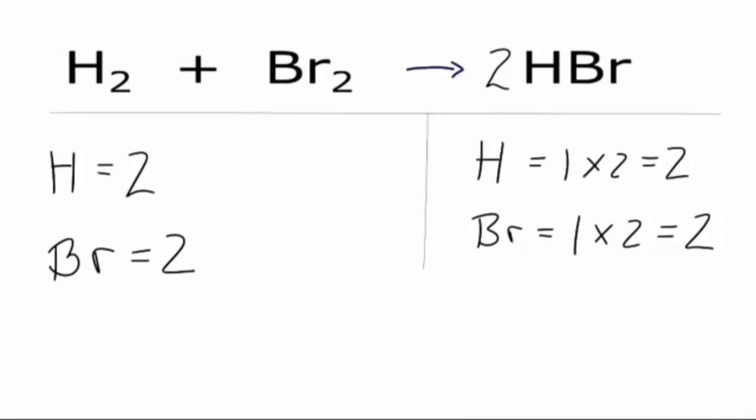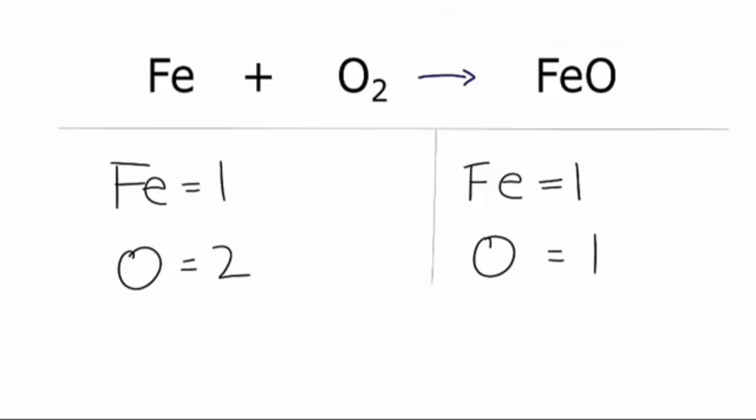Let's try another. For this equation, I've already counted the atoms. Let's see what we can do to change our coefficients. We see that iron is equal, but we have two oxygen on the reactants and one on the product. So I'm going to change the coefficient in front of this FeO molecule so that I can have two oxygen. If I put two here, one times two gives me two. But I also have to take into account the iron: one times two equals two. So I fixed the oxygen, but now the iron are not balanced. I want to have two iron on both sides of the equation. So if I put two here, the one times two equals two, and now everything is balanced.